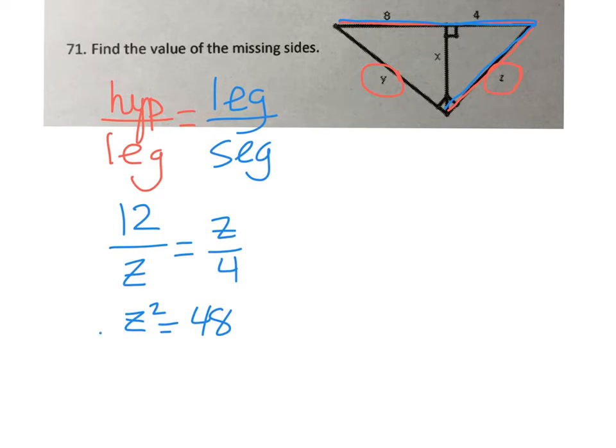Taking the square root of both sides, my calculator says the square root of 48 is 6.93.